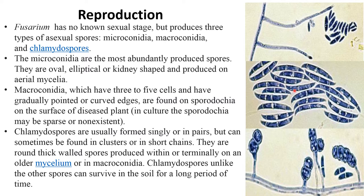Macroconidia have three to five cells. You can see there are five cells with gradually pointed or curved edges, and they are found on sporodochia on the surface of diseased plants. Chlamydospores are usually produced under unfavorable conditions, and are usually single or in pairs, but can sometimes be found in clusters or in short chains. They are round, thick-walled spores produced within or terminally on old mycelium or in macroconidia.